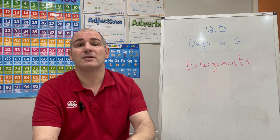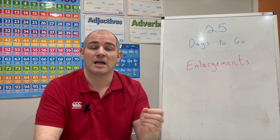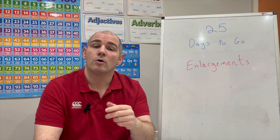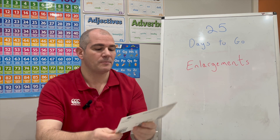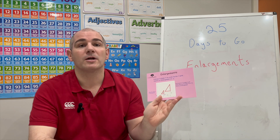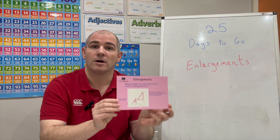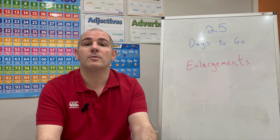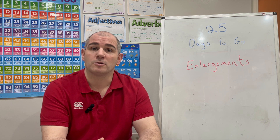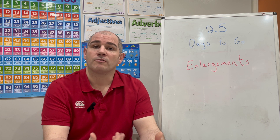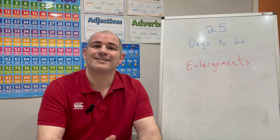In today's video, with 25 days to go, we're going to look at the topic of enlargements — another one of our transformations, where shapes may get bigger or even smaller with a fractional scale factor. For example, a scale factor of a half means the shape gets smaller. We'll look at how to enlarge shapes on grids — that's card number 84 if you've got the Maths revision cards. We'll also cover how to describe enlargements, including with fractional scale factors. Let's get started.